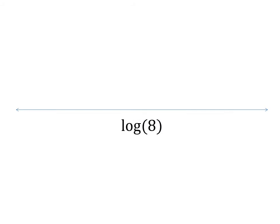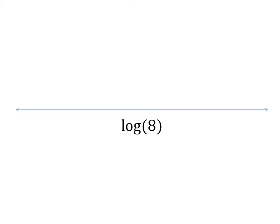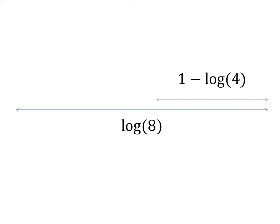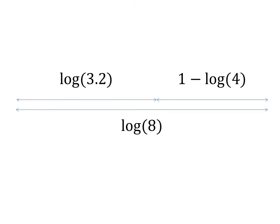Graphically, the process of multiplying two large numbers together looks like this. We start with a line whose length represents the logarithm of the first number. Then we subtract from it 1 minus the logarithm of the second number. The difference we end up with represents the logarithm of one tenth of the actual product.